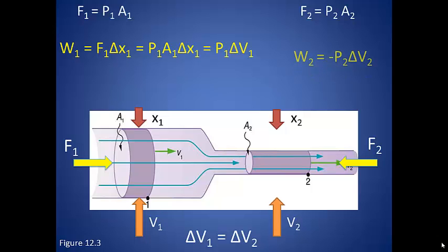In the same way, we can describe the work being done on the right as the pressure times the change in volume. The only difference here is that the work is being done in the opposite direction, so it becomes a negative.